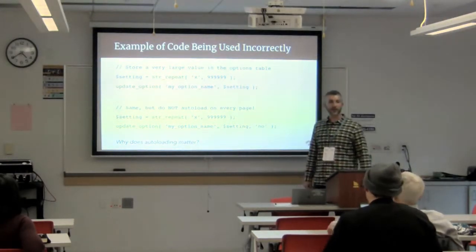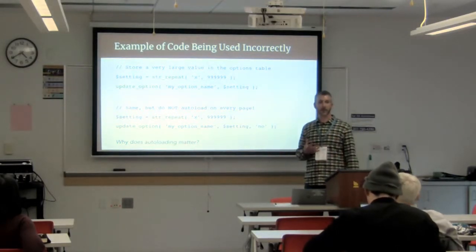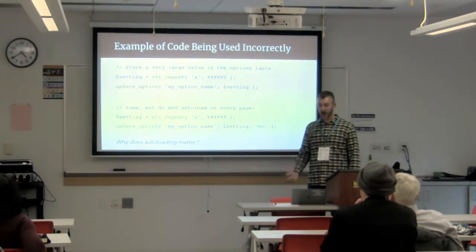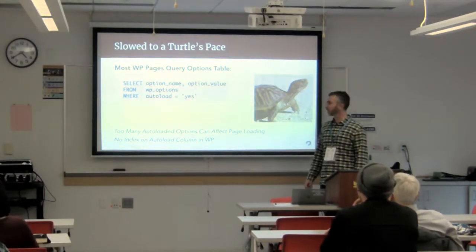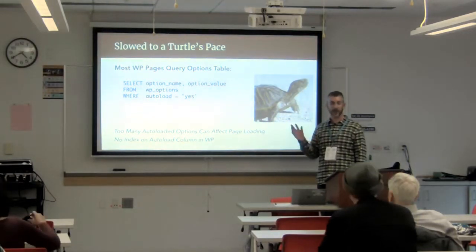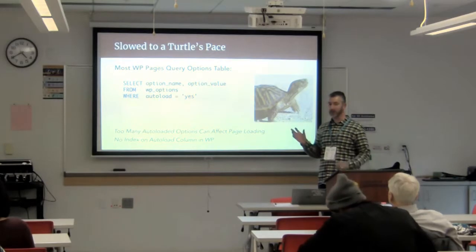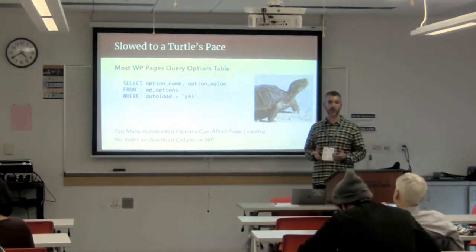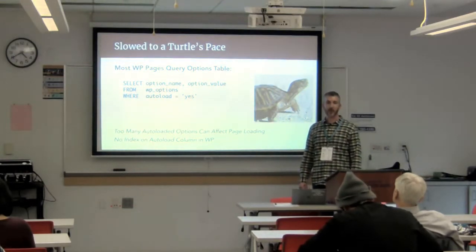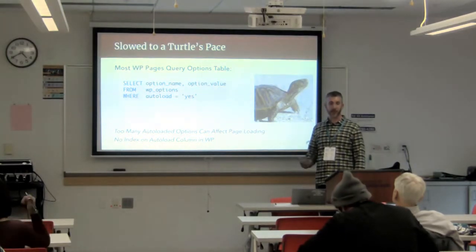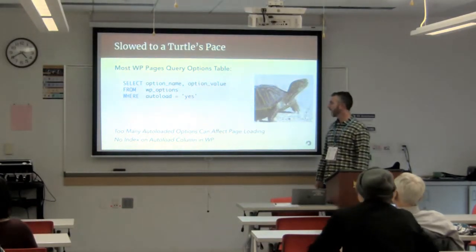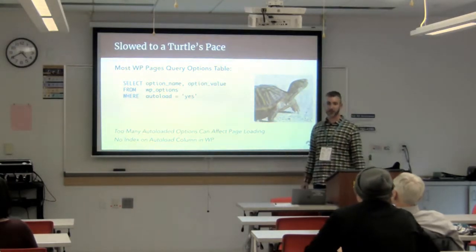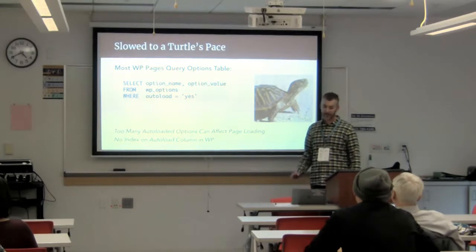Autoloading basically loads things into memory so we don't have to make 50 calls to the database, which is actually more efficient in the long run. WordPress runs this SQL query on every single page: it selects all the options in the options table that are set to 'yes' for autoload. When it's a small number of rows, this is very efficient and fast. However, when you have a lot of rows, this can take extra milliseconds — I've seen it take an extra second — and it can slow down your page load on every page of your site. The reason for the slowness is that WordPress does not have an index on the autoload column.